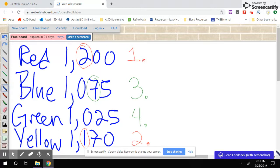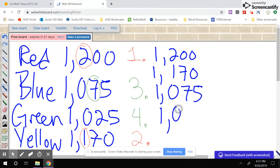Now I have 1,200, 1,170, 1,075, and 1,025.